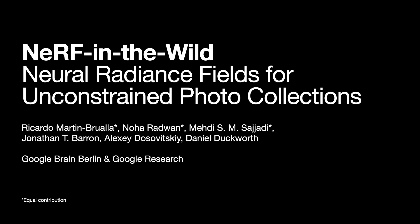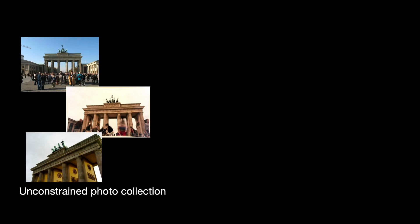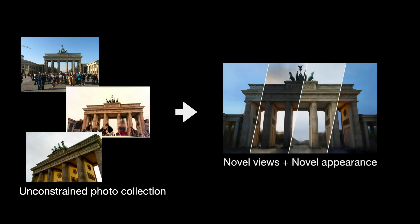In this work, we present NERF in the Wild, an extension of neural radiance fields, or NERF, that can be used on the sort of unstructured and uncontrolled photo collections you might find on the Internet. Our system takes as input an unconstrained photo collection of some scene — in this case the Brandenburg Gate in Berlin — and produces as output novel images of that scene where the camera can be moved, and also the appearance of the scene can be changed.